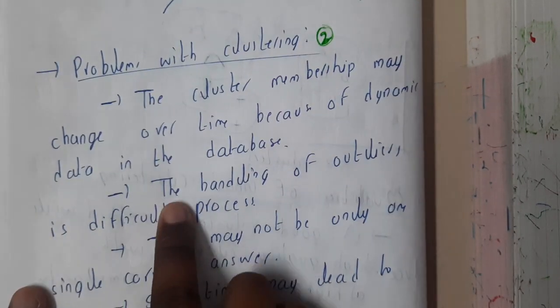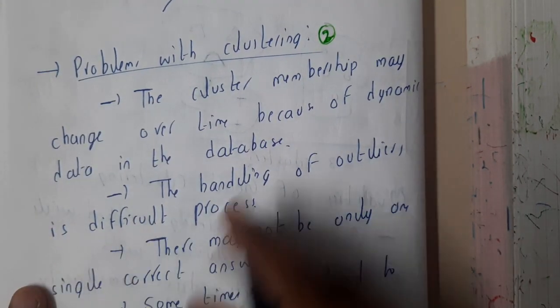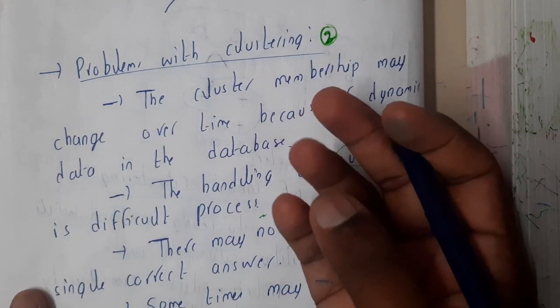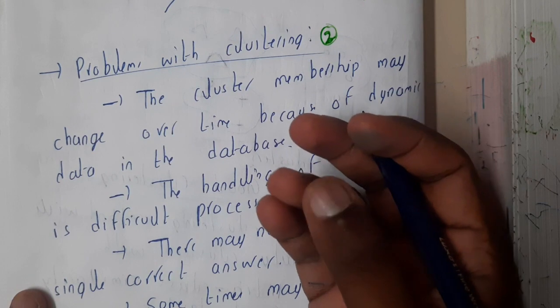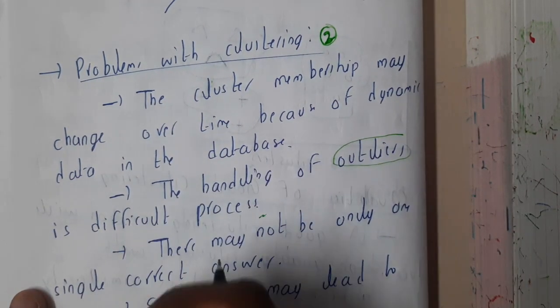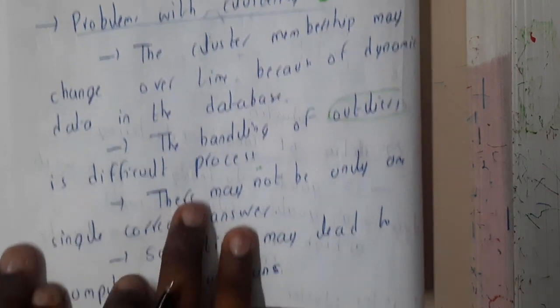The handling of outliers is a difficult process. Outliers, in simple words, are errors or noise. In some data we might be having some noises, and removing them is a bit tough.